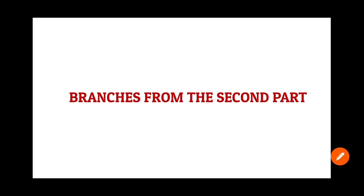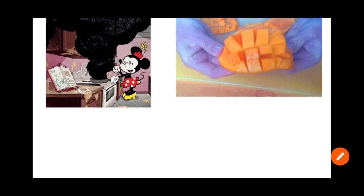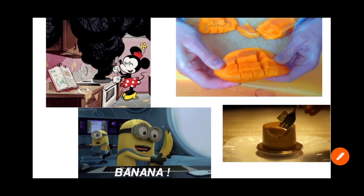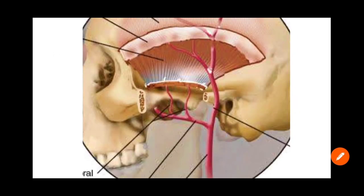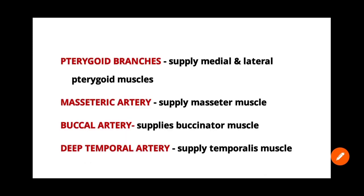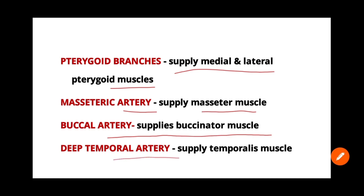Branches from the second part, the pterygoid part, consist of four branches. The mnemonic is 'she prepared mango banana desert' — PMBD. The four branches are: pterygoid branches supplying the medial and lateral pterygoid muscles, masseteric artery supplying the masseter muscle, buccal artery supplying the buccinator muscle, and deep temporal artery supplying the temporalis muscle.